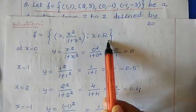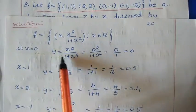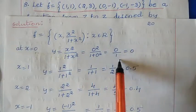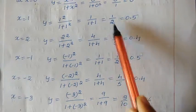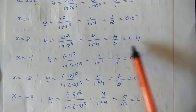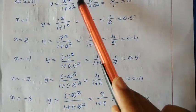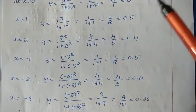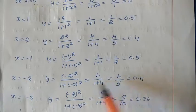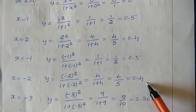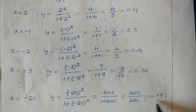Let us put some values. Since x belongs to the set of real numbers, I will give positive as well as negative values and see what answer we get. For x = 0: y = 0²/(1+0²) = 0/1 = 0. For x = 1: y = 1/(1+1) = 1/2 = 0.5. For x = 2: y = 4/5 = 0.4. For x = -1: since we are squaring the number, negative values give the same answer — 0.5. For x = -2: (-2)²/(1+(-2)²) = 4/5 = 0.4. For x = -3: 0.36. If I give a large value like x = -20, I get 0.997.